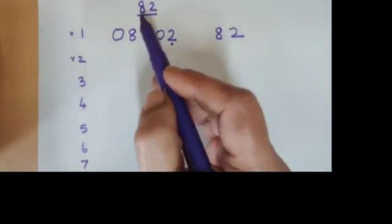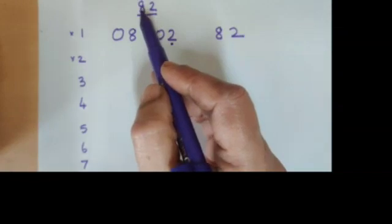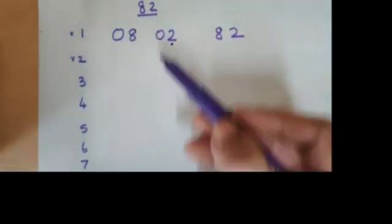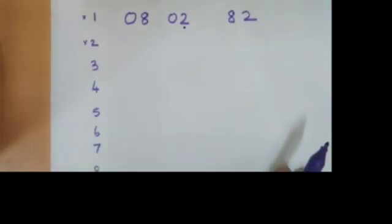For example, let's look at the next one. First we need to write the 8 times table fully, the 2 times table fully. That's it.